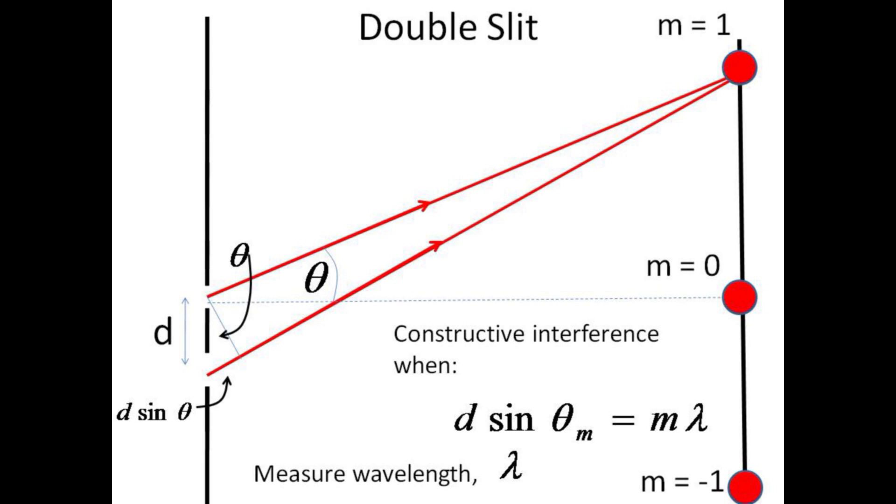The double slit has only two somewhat closely spaced sources of coherent light that interfere with one another. Maxima in intensity occur again whenever d sin θ equals m λ. Because the slit spacing d is not as small as for the grating, the angle between interference maxima is also small.